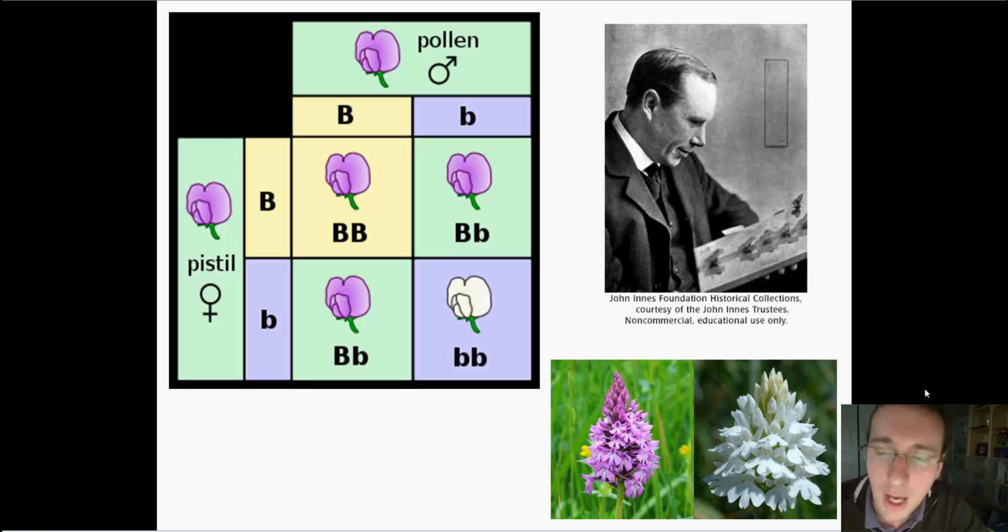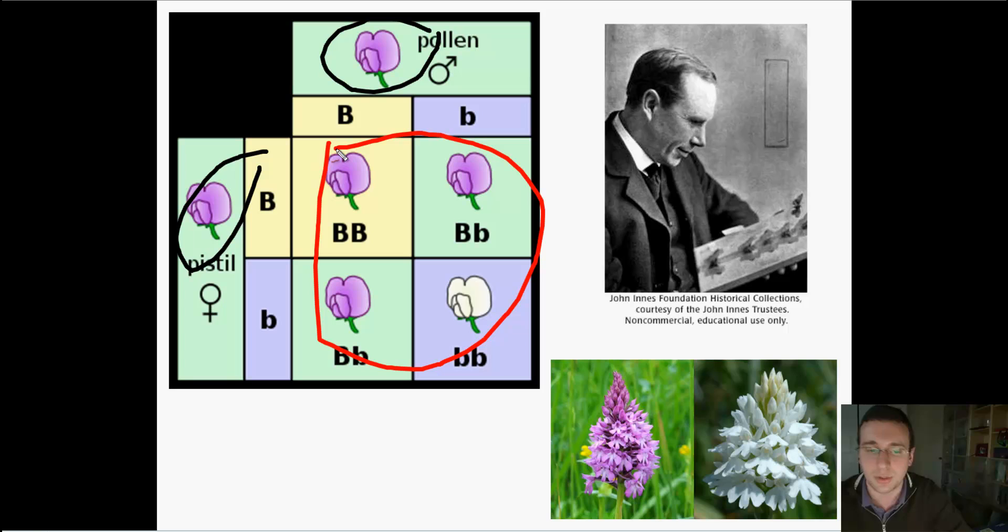Offspring is the people that come out. So in this example here, you see that there's two purple flowers crossing to make several different kinds of flowers. So these flowers here is what we call the progenitors or parents of this cross. And these are what we call the offspring, the children, or the progeny of these crosses.